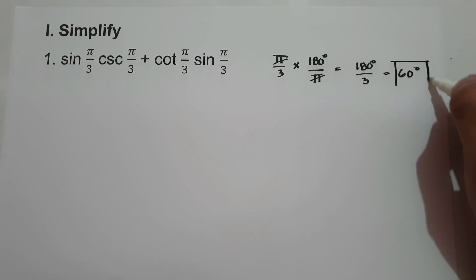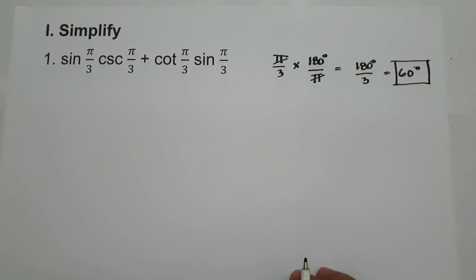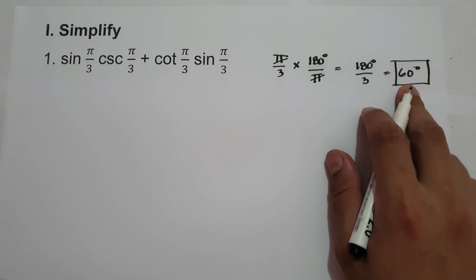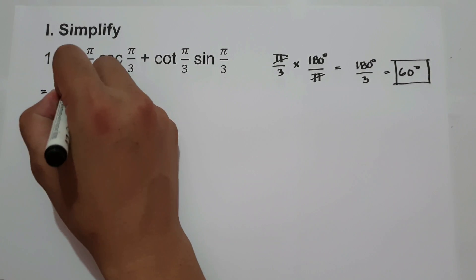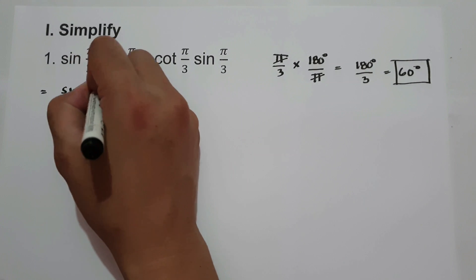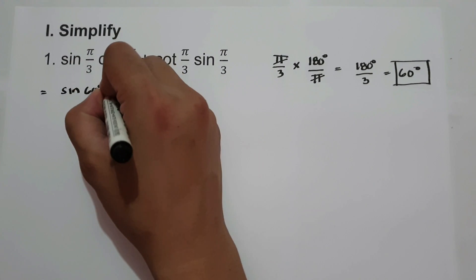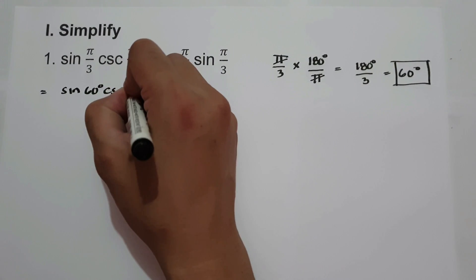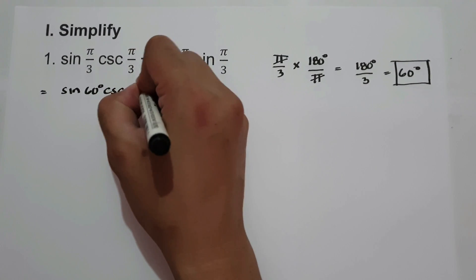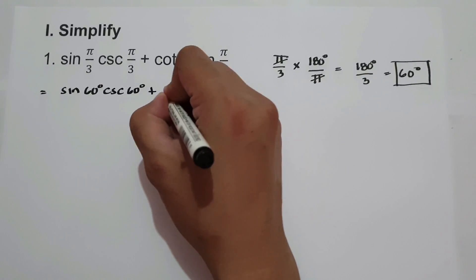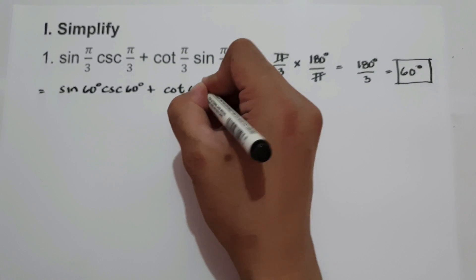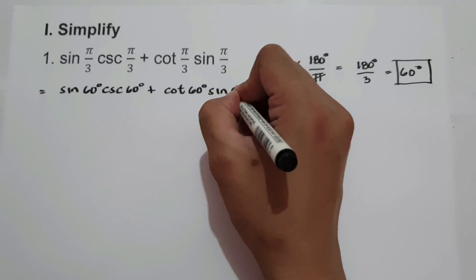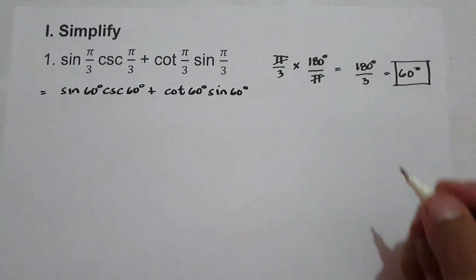So pi over 3 equals 60 degrees. Let us substitute this into the given expression: sine 60 degrees times cosecant 60 degrees, plus cotangent 60 degrees times sine 60 degrees.